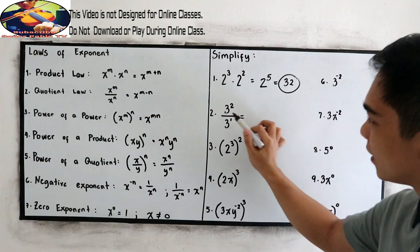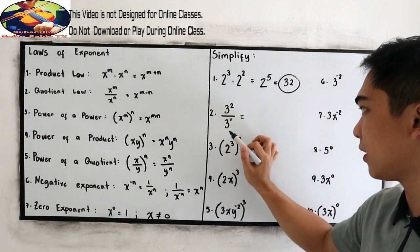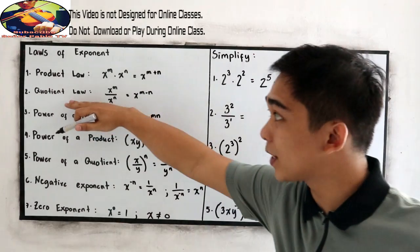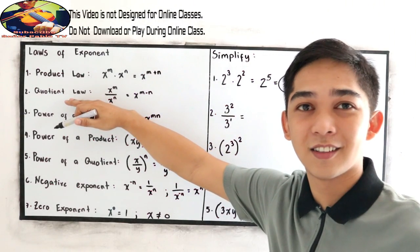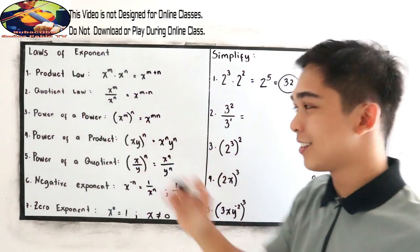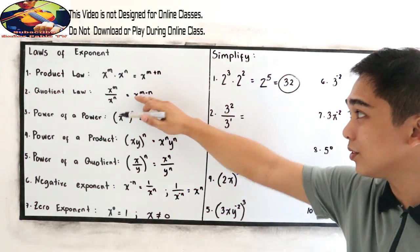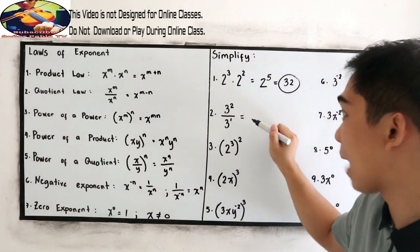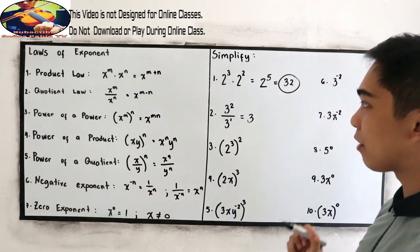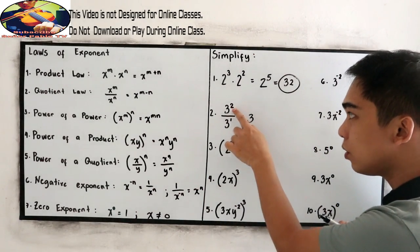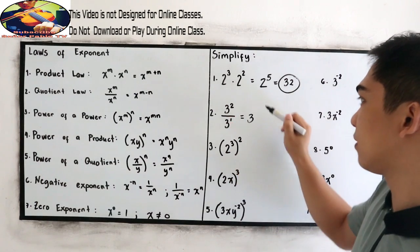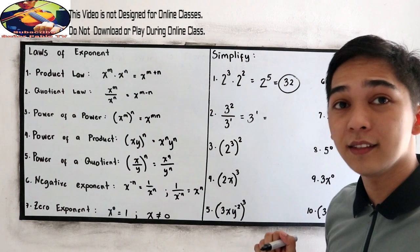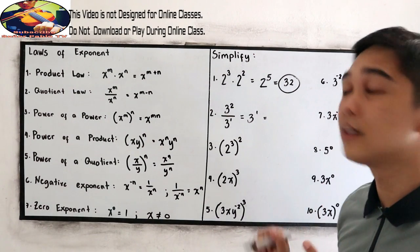Number 2: 3 squared over 3 raised to 1. We apply the quotient law — since we have the same base, subtract the exponents: 2 minus 1 equals 1. So the result is 3 raised to 1, which is simply 3.